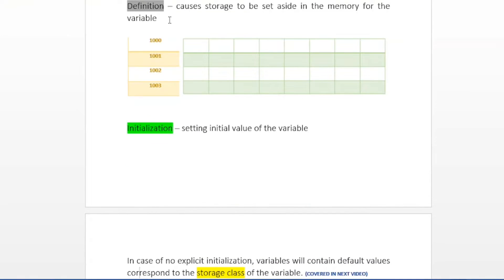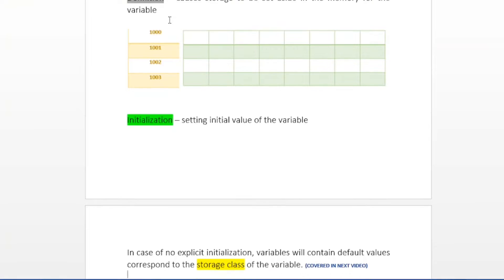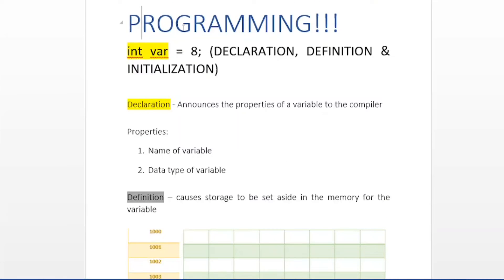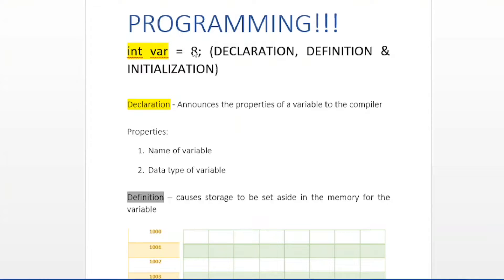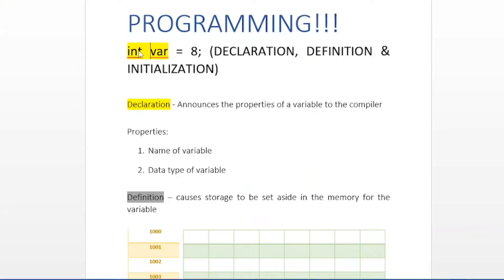Initialization means setting the initial value of the variable. Here, I have given the initial value for variable var. Now we have seen the meaning of all three things — declaration, definition, and initialization. In this single line, all three are happening. That is, I have given the initial value, and I have given its type and name as well.